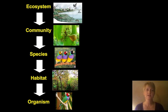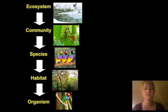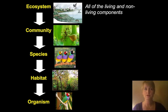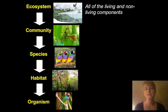All right, so let's define a few terms first. Some of these terms we tend to use interchangeably, but they have actual definitions. So an ecosystem is all of the living and non-living components in that area. We can talk about an ecosystem on a very large scale, like the earth, or on a small scale, like a lake or a river. It includes living things — animals and plants — and non-living components like rocks and water.